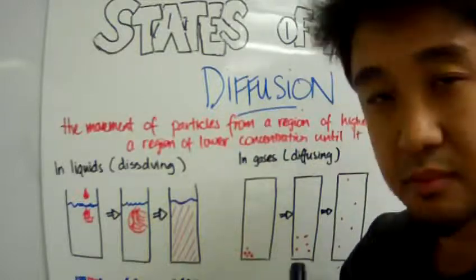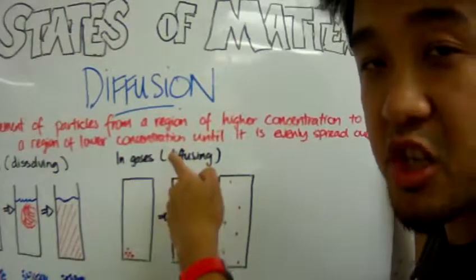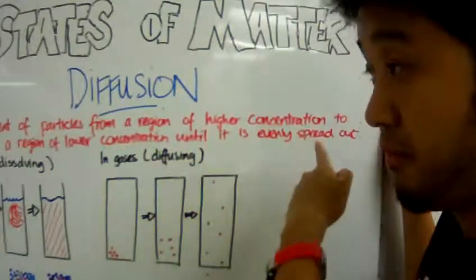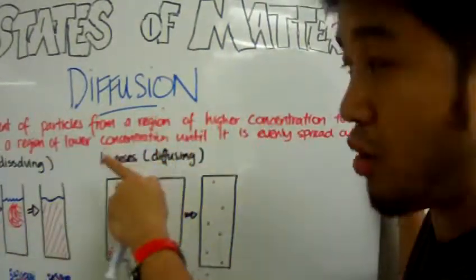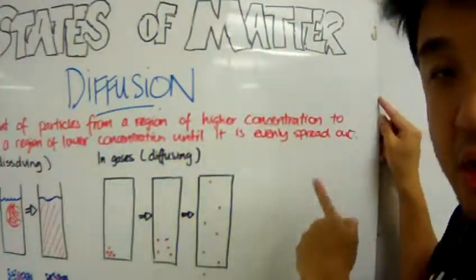Now diffusion can be defined as the movement of particles from a region of higher concentration to a region of lower concentration until the particles are evenly spread out.